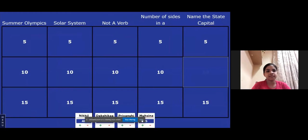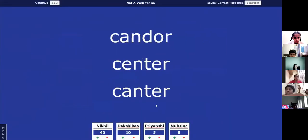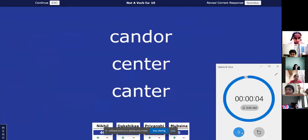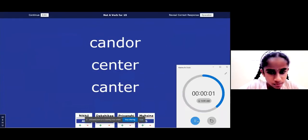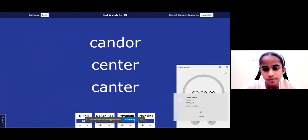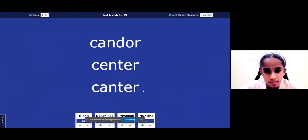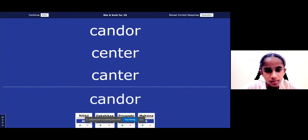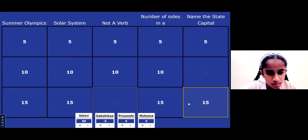Before we move on to the next participant, let me make sure the timer works. You'll see the timer at the bottom. Dakshika, please make a selection. Not a verb, 15. Not a verb, 15 points. Candor, center, canter. Center. You gave the answer at the very... I'll accept the answer, but then we'll see if that's the right answer. That is the wrong answer. So, you get minus 15.